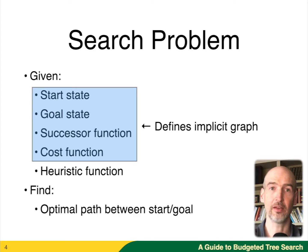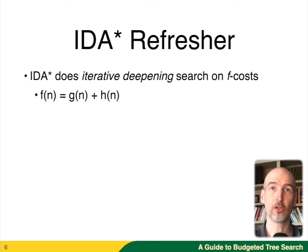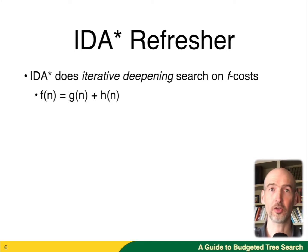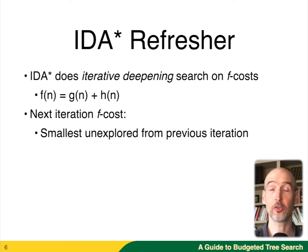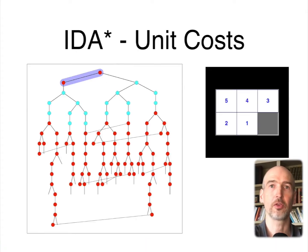The goal, at least for today, is to find optimal paths between the start and the goal. The first question we want to answer is: why do we need budgeted tree search? To understand that, we need to look at IDA*, which is the algorithm we're going to be comparing against. IDA* is an algorithm that does iterative deepening on F costs, where F costs are estimates of the optimal cost from the start to some node N and then from N to the goal. The G cost is the cost from the start to N, and the H cost is the estimate from N to the goal. IDA* is very conservative — it searches from the minimum F cost, then the next greatest F cost, and continues doing iterative deepening iterations with each possible F cost.